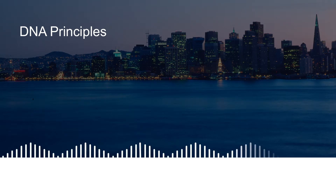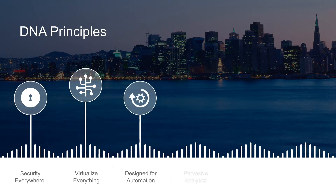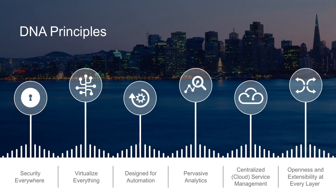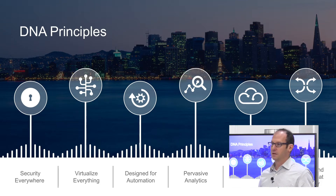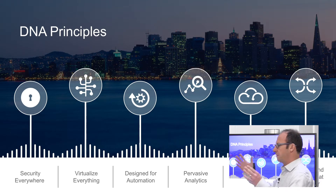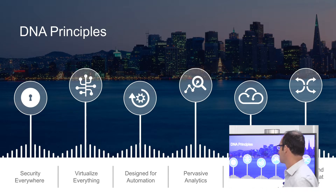When we talk about digital transformation, and many businesses are going through that transformation today, we really looked at what does it mean for the network. If I'm a business and I want to become digital, what do I need to have in my network in order to support that transformation? In our digital network architecture, we looked at several key principles. The first one is security — if I'm going to have more devices connected to my network and connect outside of my private data center, I need security everywhere.